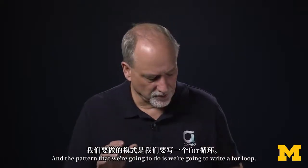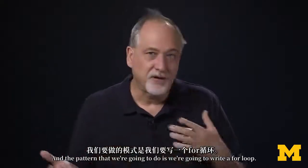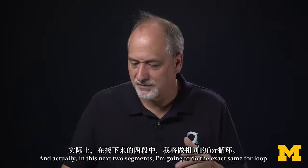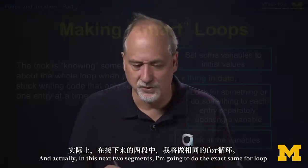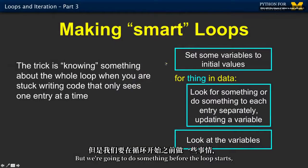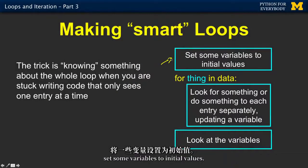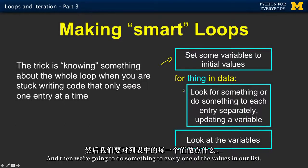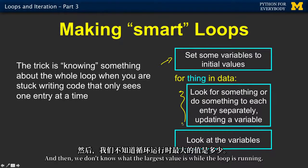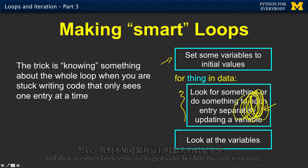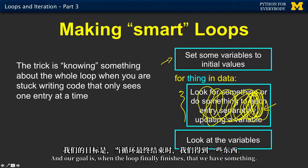The pattern that we're going to use is: we're going to write a for loop, and in the next two segments I'm going to do the exact same for loop. We're going to do something before the loop starts — set some variables to initial values — and then we're going to do something to every one of the values in our list. We don't know what the largest value is while the loop is running, and our goal is that when the loop finally finishes, we have something.